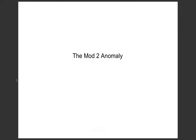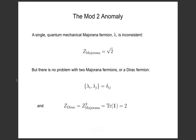Let me start by telling you about what's now called the mod-2 anomaly. It's the simplest example of a quantum field theory that doesn't make any sense — that's what it means to have an anomalous quantum field theory. In fact it's so simple it's not even quantum field theory, it's just quantum mechanics. The quantum system that I claim doesn't make any sense is a single real — that is, a single Majorana — fermion in quantum mechanics.